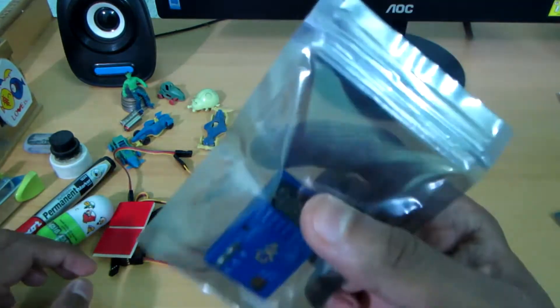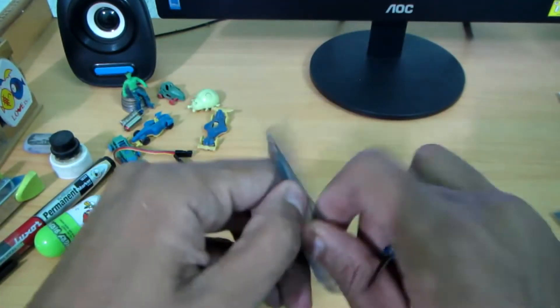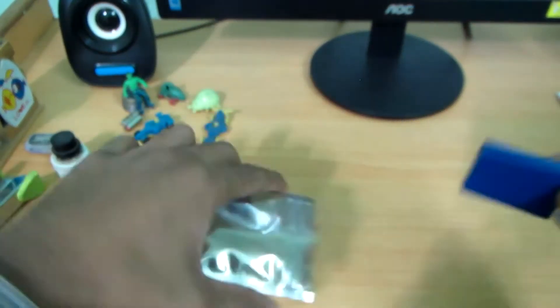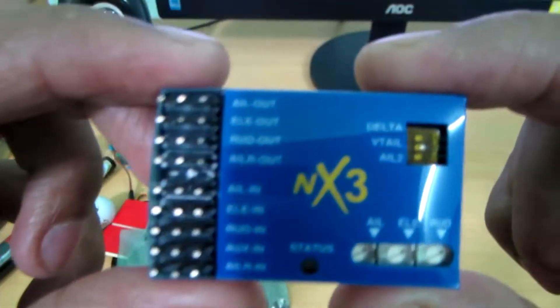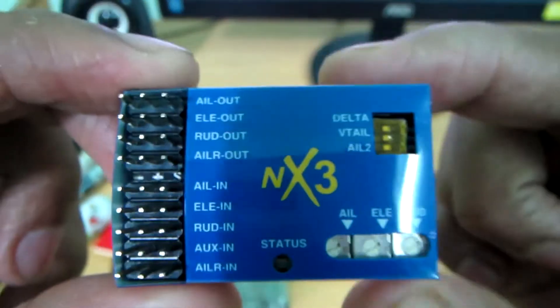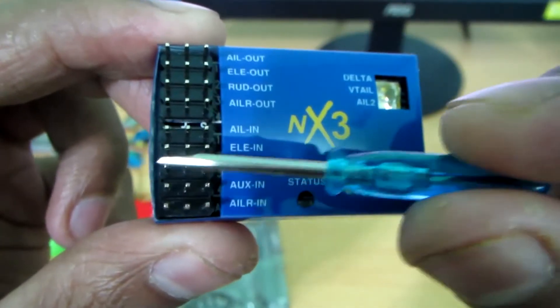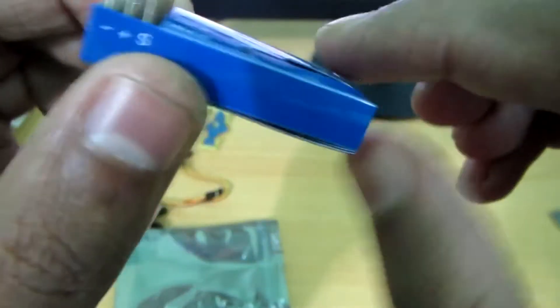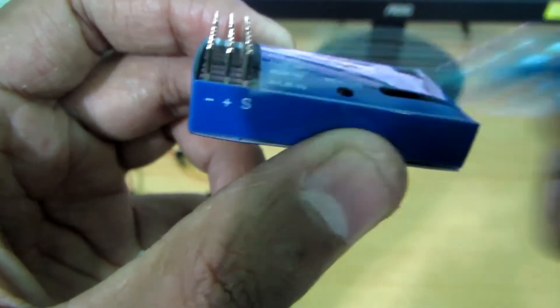Now come to the main module. This is the main module. These are the input ports, and these are the outputs. Signal, positive, negative.